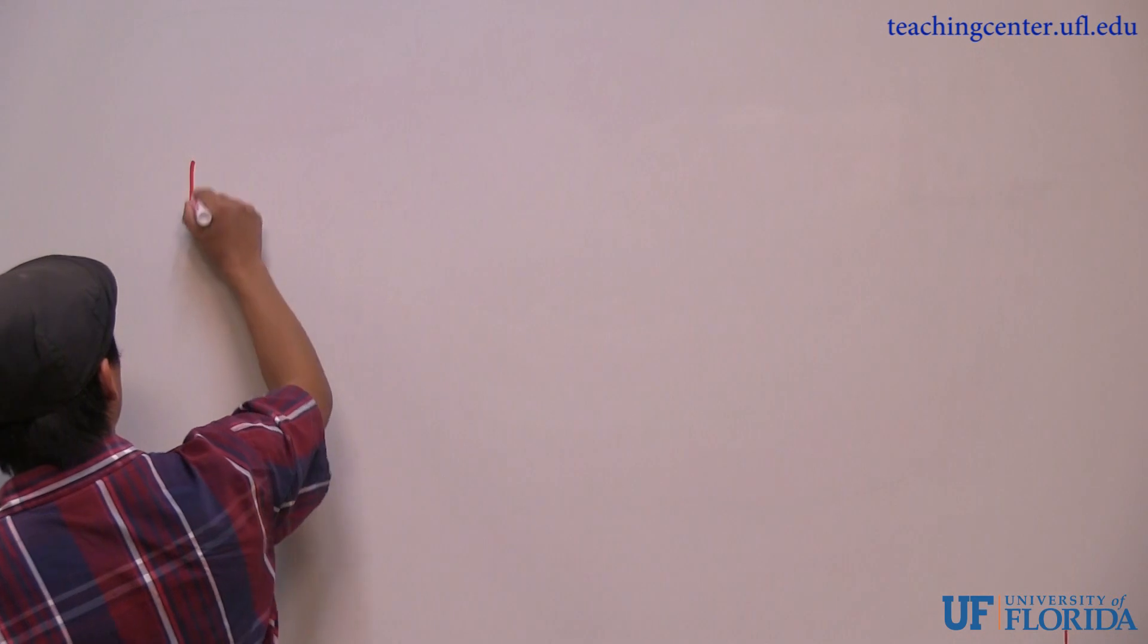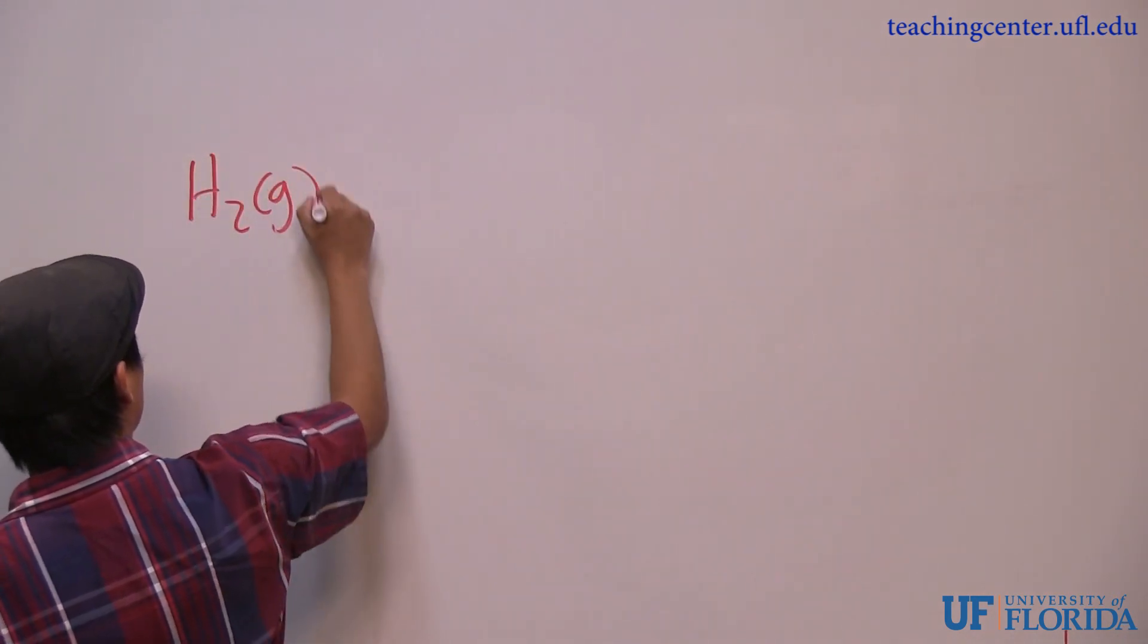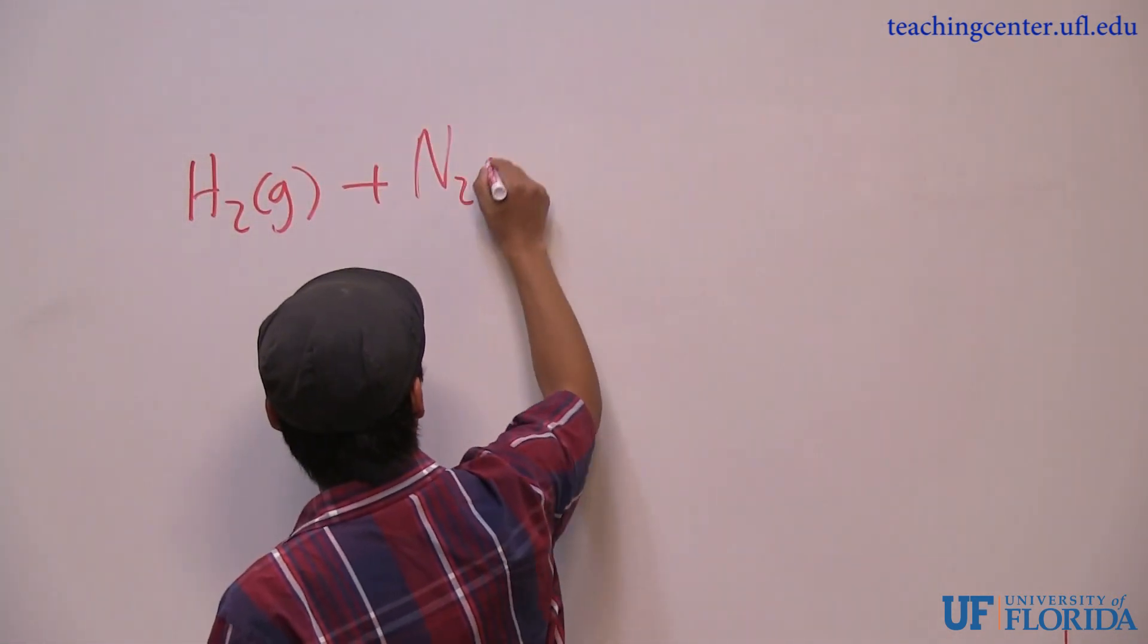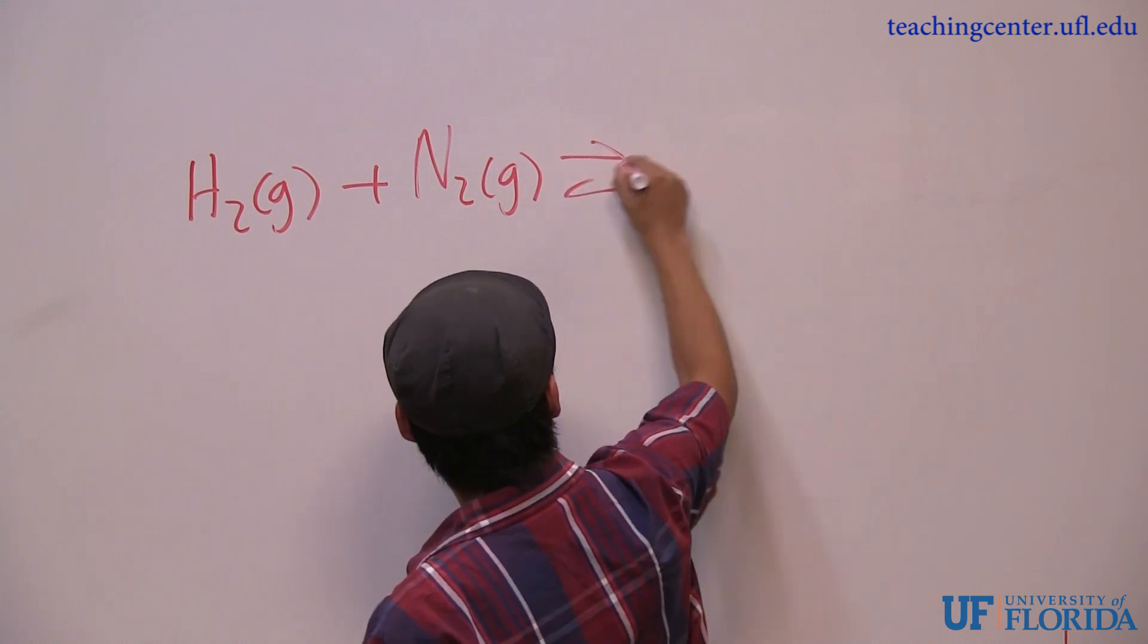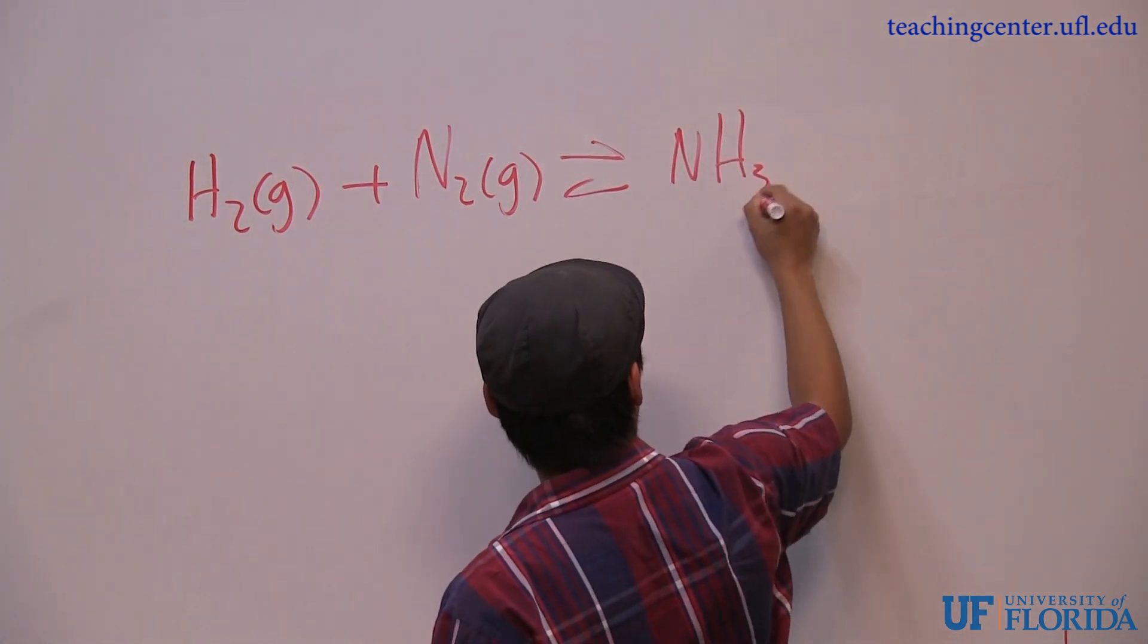What's going on here is we have hydrogen gas and nitrogen gas forming ammonia gas. Remember, hydrogen and nitrogen are diatomics, so they exist as H2 gas plus N2 gas form NH3 gas.